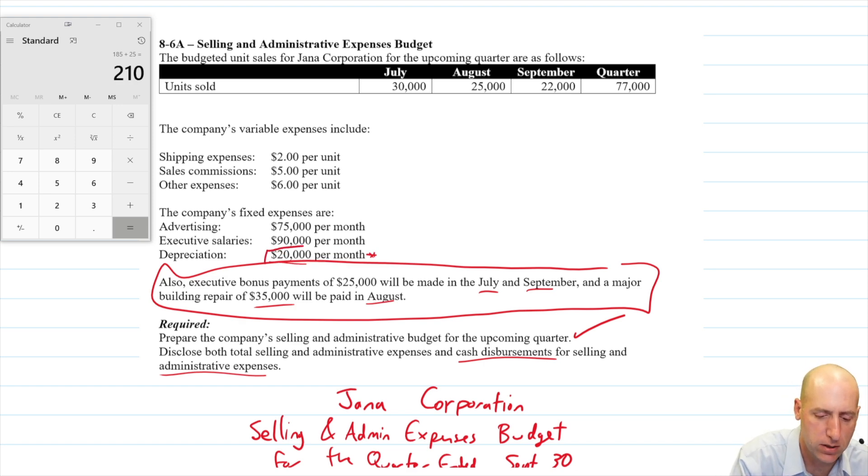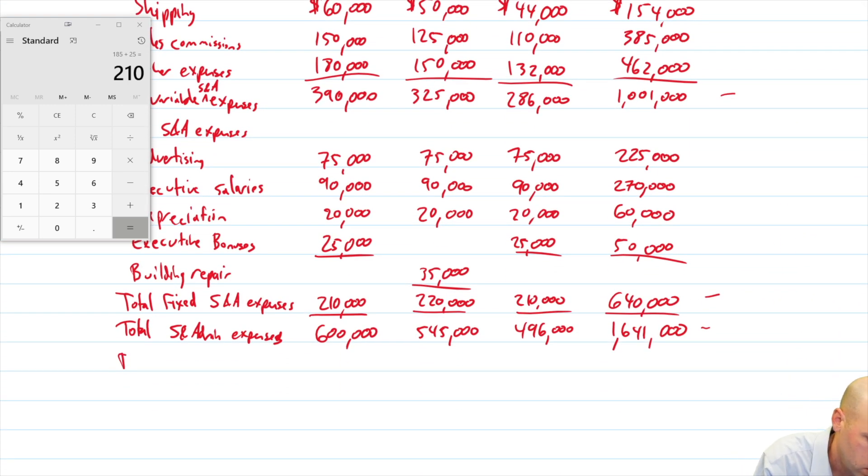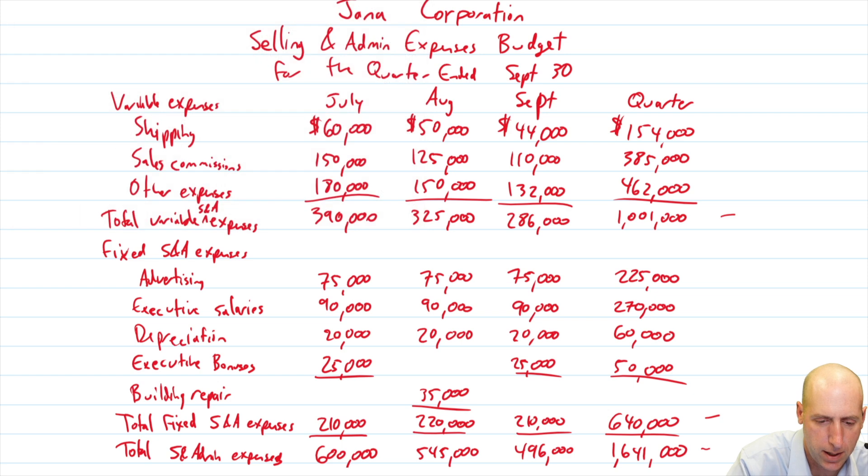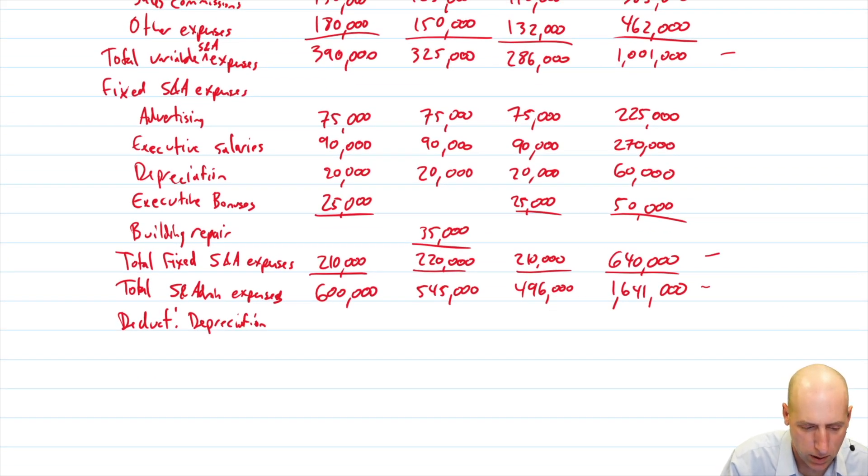This 20,000 needs to be backed out. So, we just deduct depreciation. So, it is a legitimate expense. It just doesn't involve cash. Where all these other ones, you know, shipping. Oh, my goodness. What happened there? We're shipping sales commissions. We're paying somebody. Right? Money is changing hands there. Depreciation. No money changes hands.